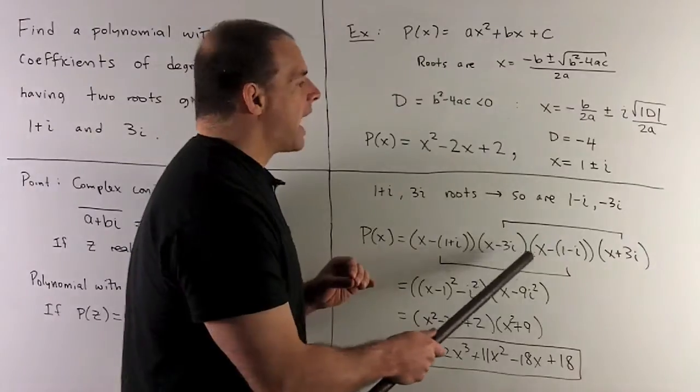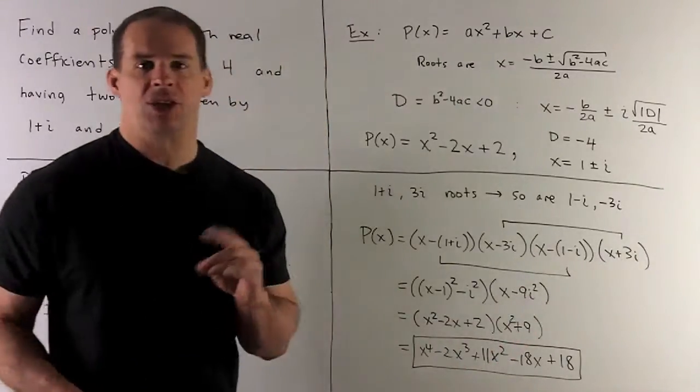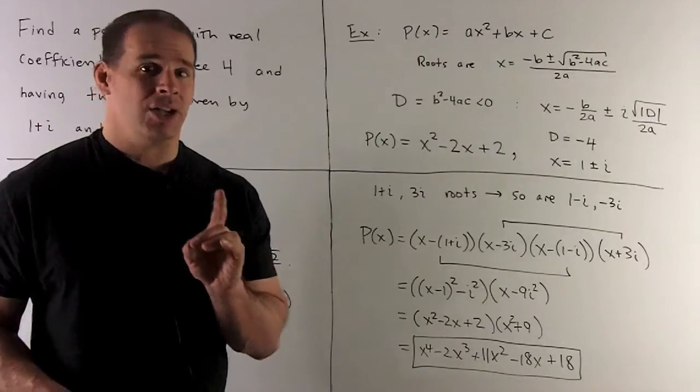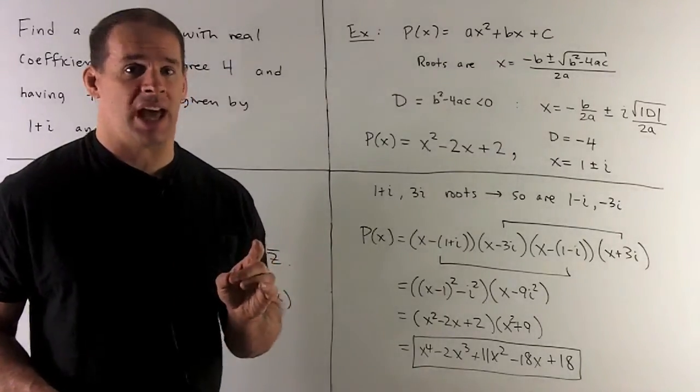For instance, if I take x minus 3i, x plus 3i gives me x squared minus 3 squared i squared. i squared is minus 1, so that becomes x squared plus 9.